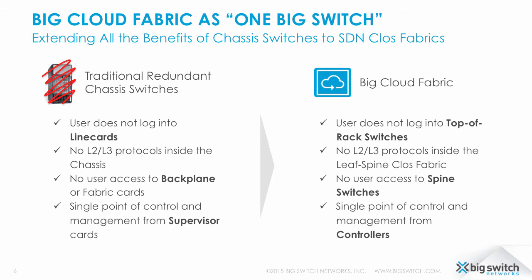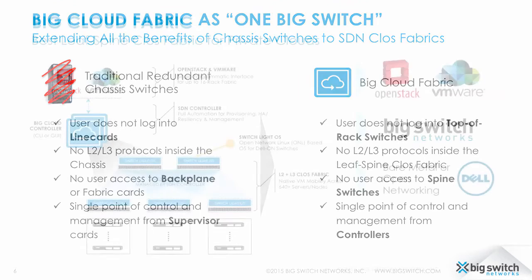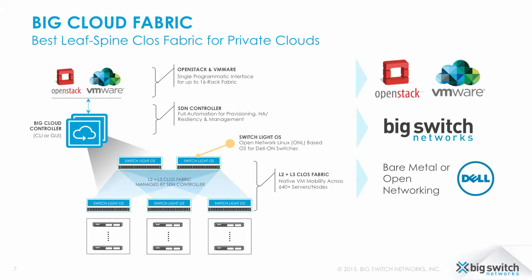Using zero-touch fabric, Big Cloud Fabric does the same thing as a traditional chassis supervisor detecting a new line card. When you add a new switch, you just give the controller the switch MAC address and identify it as a leaf or a spine. The controller takes care of the rest.